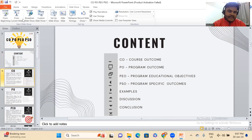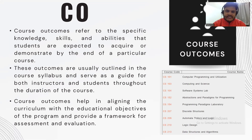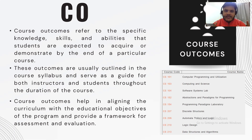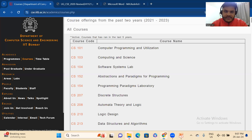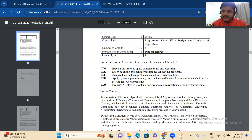Let's come back to the presentation and begin with CO — that is Course Outcome. Course outcome refers to the specific knowledge, skills, or ability that students are expected to acquire by the end of that particular course. For example, if you are learning data structures and algorithms, there might be some course outcomes that course will give you. We can see this on the IIIT website: if your course is Data Structures, what are the course outcomes after completion of data structures?